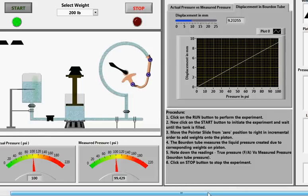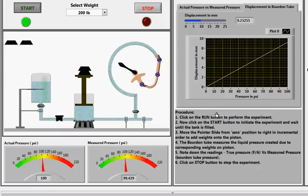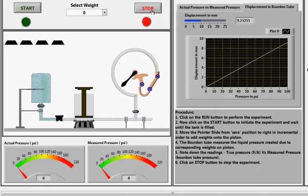After completing the experiment, click on the stop tab. I hope you all have understood the purpose and the process of pressure measurement using Bourdon tube. You can go through the experiment and documentation given in our website. Lastly, I'd like to say thank you to all of you for listening to this audio tutorial. Thank you.